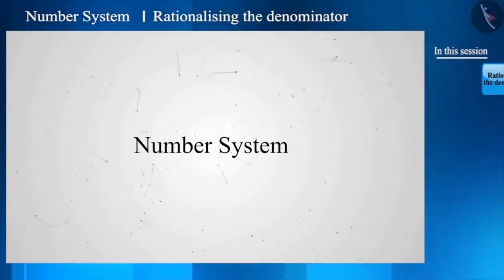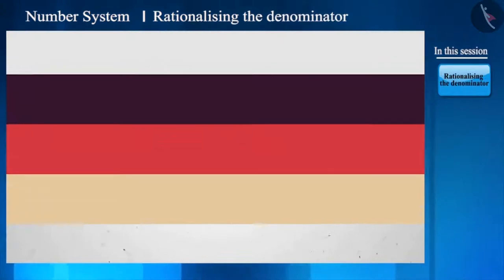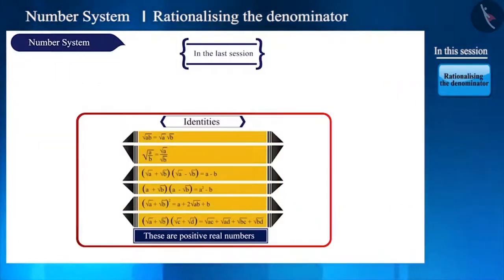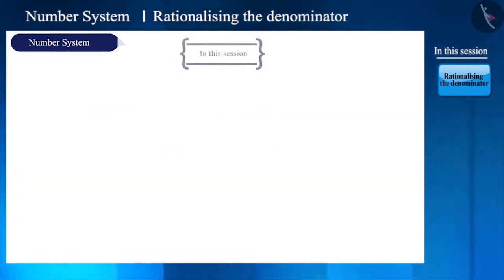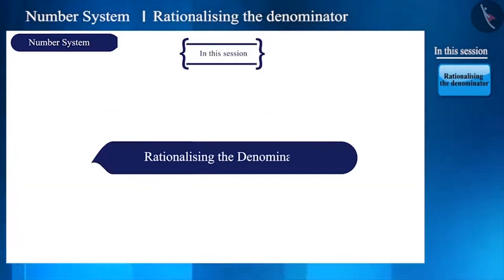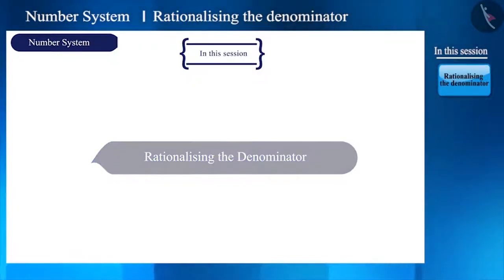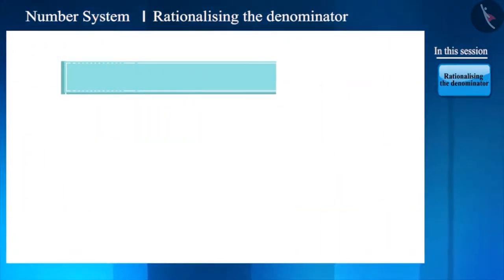Hello friends, welcome to this video on number systems. In the previous video we studied about some identities. Now we will learn how to rationalize the denominator using the same identities. So answer this question: Is it easier to divide the number 1.231 by 2 or 2 by 1.231?